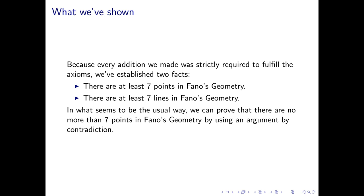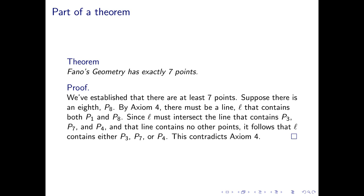In that construction, we showed there are at least seven points in Fano's geometry. This also shows there are seven lines, because we didn't add a line unless absolutely necessary — giving us a lower bound. In our usual way, we'll show there are exactly seven points and exactly seven lines by assuming an eighth point or line exists and deriving a contradiction. Let's prove Fano's geometry has exactly seven points.